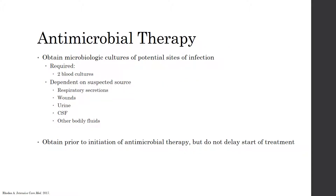During the diagnosis process of sepsis, providers should always obtain cultures to determine the source of infection. Two blood cultures should be obtained for each patient regardless of suspected site of infection. In addition, cultures should be obtained from the suspected site of infection, which may include respiratory secretions, wounds, urine, cerebrospinal fluid, or other places. It is important that these cultures are obtained prior to starting antimicrobial therapy, as long as it does not delay the start of therapy.